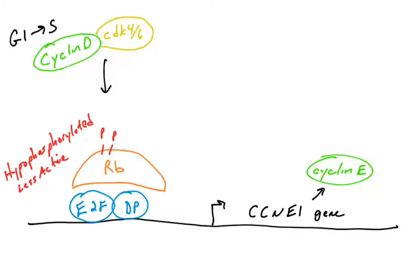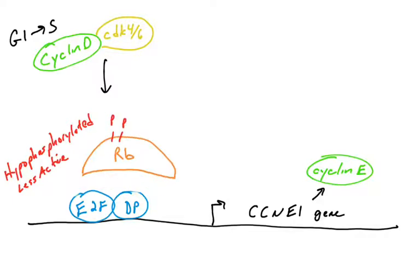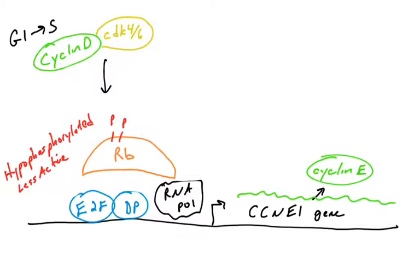Remember, the function of RB is repression. So when it is phosphorylated, it represses less. That means it will allow E2F and DP1 to function as transcription factors — their role is to recruit RNA polymerase to the gene and allow transcription to occur, producing protein. So now that cyclin D is present, RB begins to be phosphorylated, allowing for the transcription of the cyclin E gene, which allows cyclin E protein to be produced.